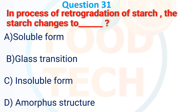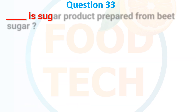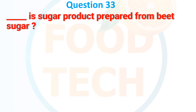Question 31: In the process of retrogradation of starch, the starch changes to — A. Soluble form, B. Glass transition, C. Insoluble form, D. Hemiporous structure. The answer is B. Glass transition.